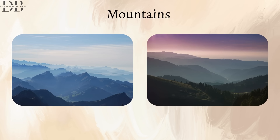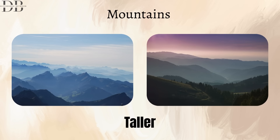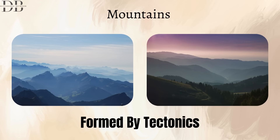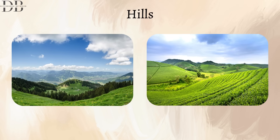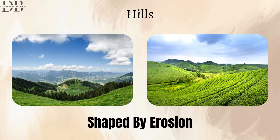So in short: mountains equals taller, steeper, formed by tectonics. Hills equals shorter, rounder, shaped by erosion.